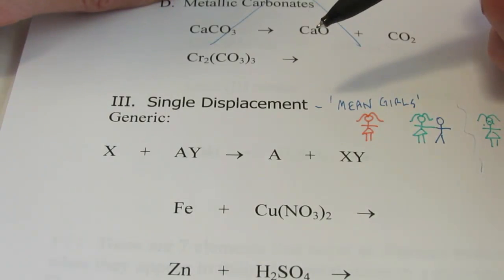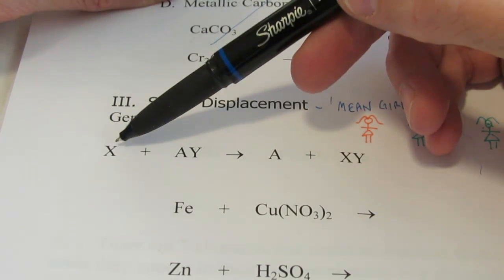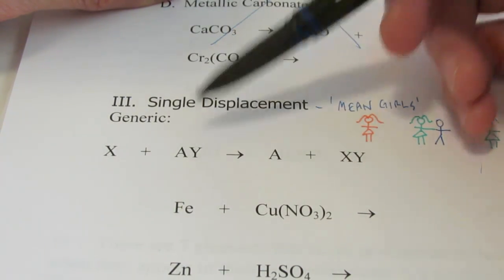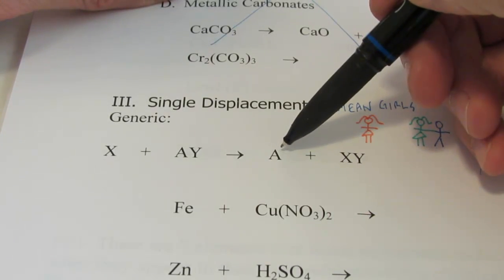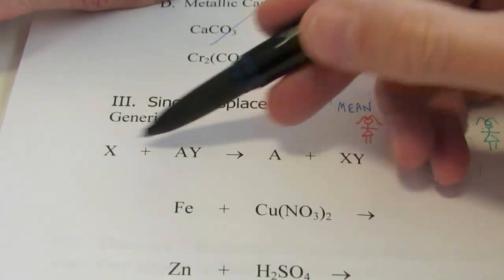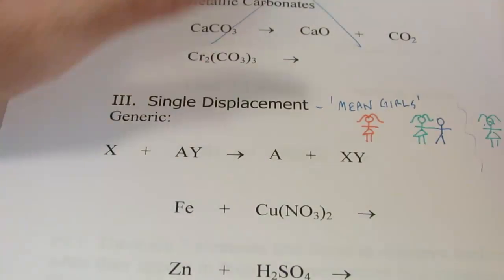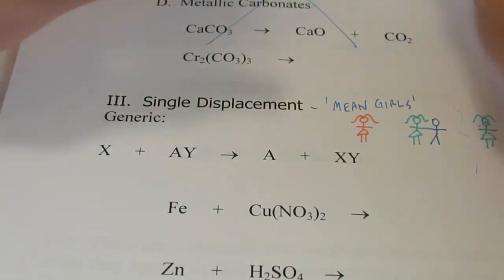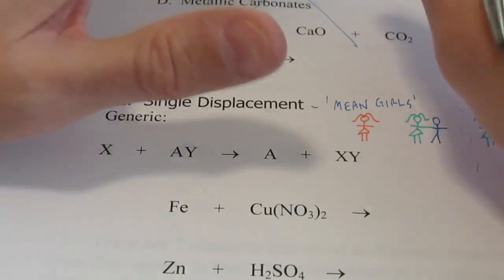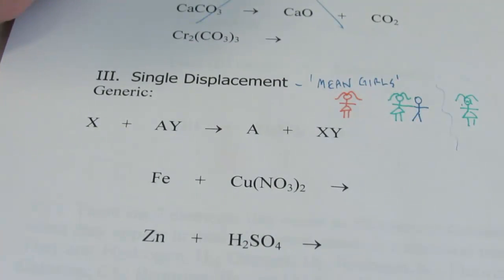Let's take a look at the generic reaction. If we have element X reacting with compound AY, A will end up by itself in its elemental form, and X will bond with Y. Once again, you have to worry about writing formulas correctly. If you can't write formulas correctly, you're not going to be very good at this.